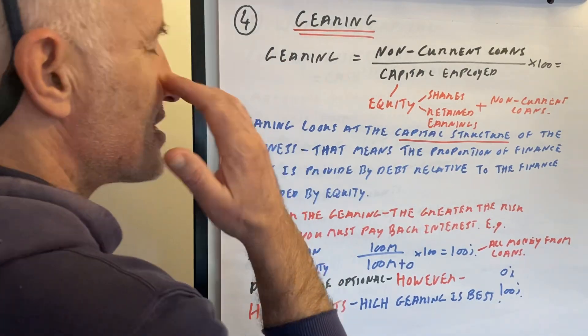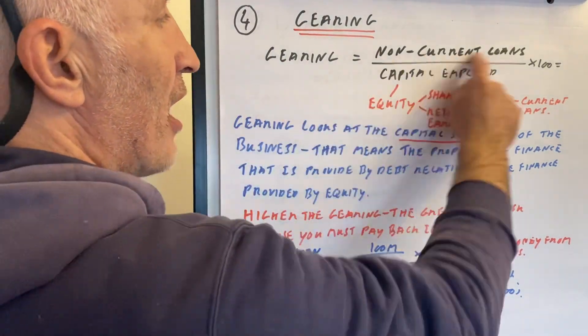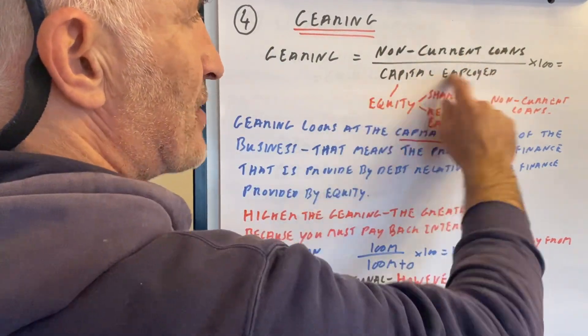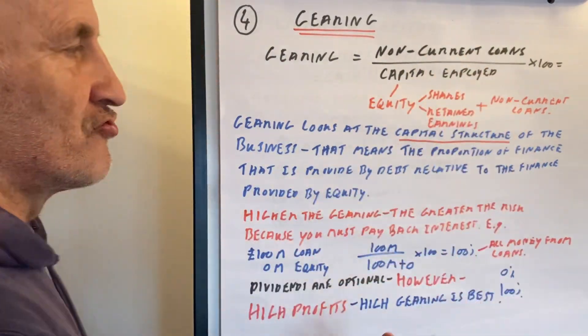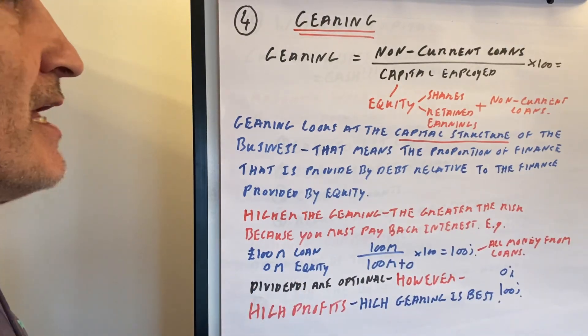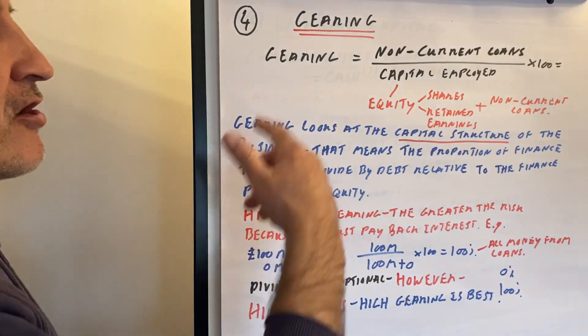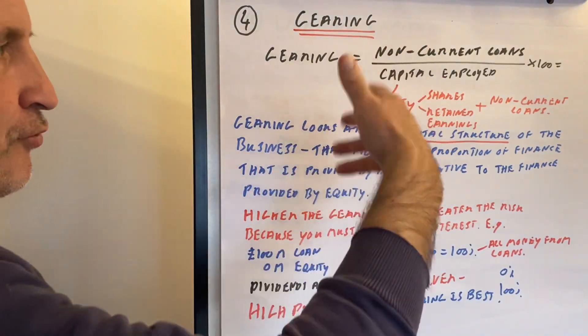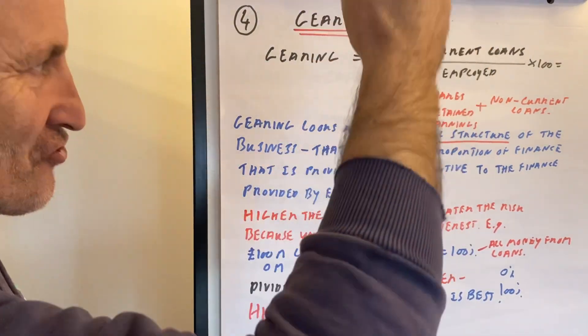Gearing. Gearing is non-current loans divided by capital employed times 100. So your non-current loans divided by capital employed times 100.